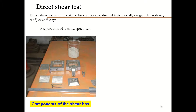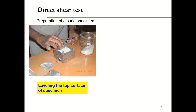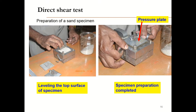Now we will see how to prepare the specimen for the direct shear test. Here are the components of the shear box — these are the porous plates and these are the two parts of the shear box. First, we will join the two parts together. Then we will put in one porous plate, and then we will place our soil sample. Here we are showing the test for a disturbed sand sample. If we have a desired density, we can compact the soil sample to that density. After putting in the soil sample, we will level the top surface of the specimen, then place another porous plate and the pressure plate. Thus the specimen preparation will be completed.